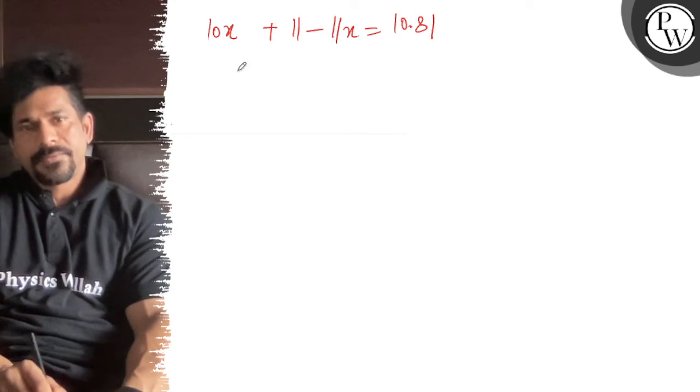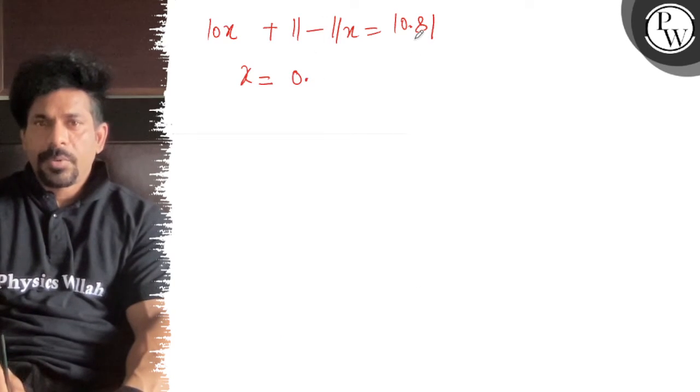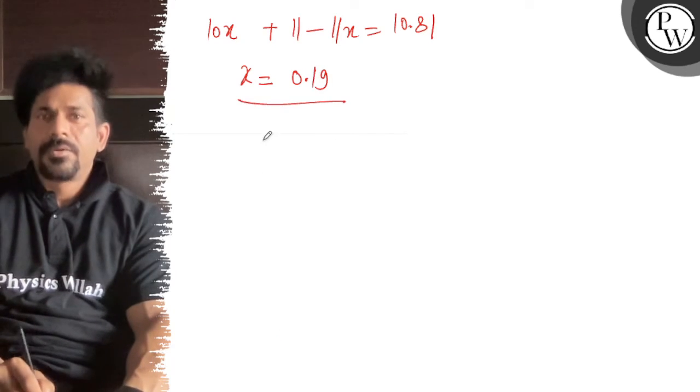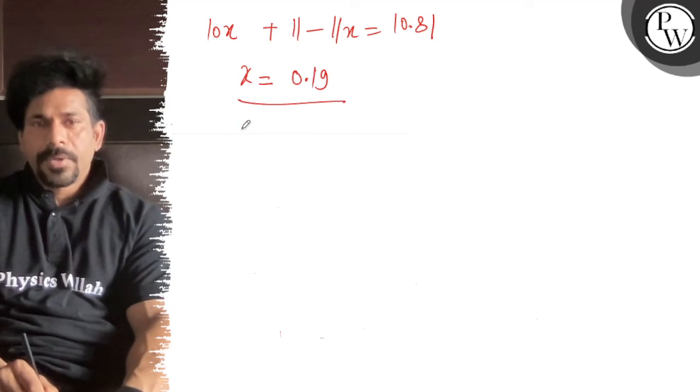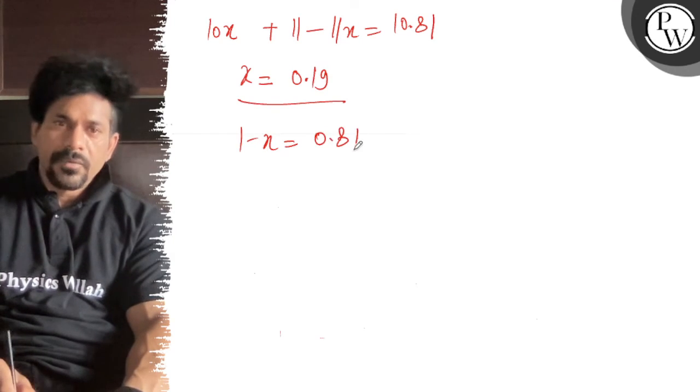So the answer is x equals 0.19, and 1 minus x is 0.81.